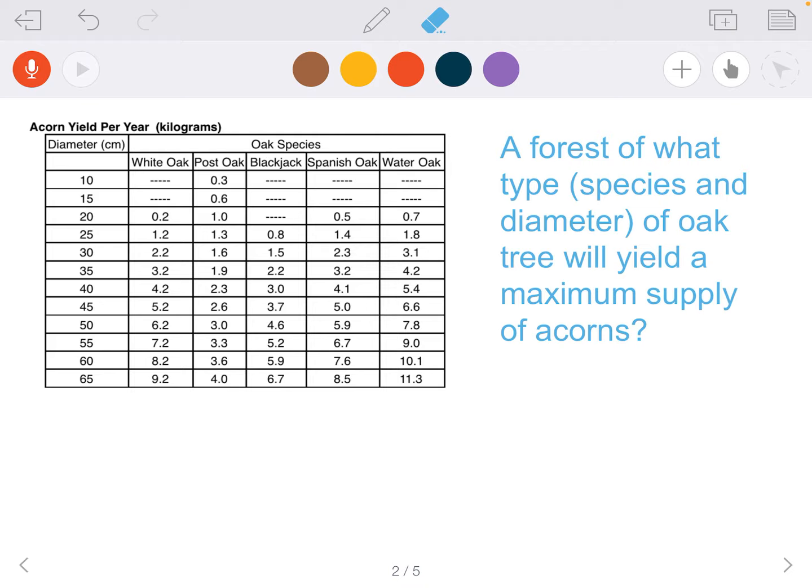Looking at the table to the left, there are five different oak species. Their diameter is the very first column, and then it shows how many acorns per year they drop. If we look at water oak and go down to 65 centimeters in diameter, our water oak is going to produce 11.3 kilograms per year of acorns. Therefore, our water oak will give us the maximum supply of acorns at 65 centimeters.